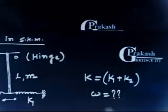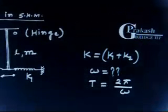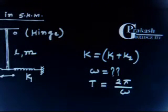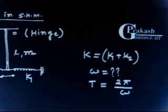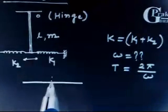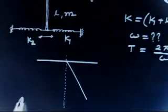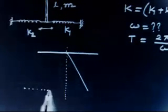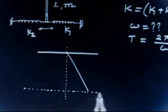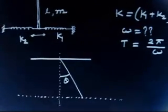We have to find the time period. Omega gives us time period as 2π/ω. My target is to find ω. So what we will do is we will displace this rod by a small angle θ and see the situation. This is the initial position of the rod. If we displace this rod by a small angle θ in the same horizontal line, this angle θ is small.